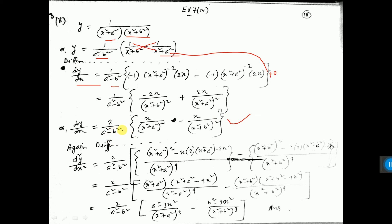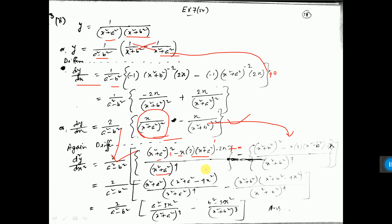Again differentiating, the constant stays outside. Now this term requires u by v differentiation. Here: v² times [v · d/dx(u) — that is x differentiation = 1] minus [u · d/dx(v) — v means this expression, 2 into the expression to the power 1, times d/dx of x² = 2x, and d/dx of a² = 0, not written]. Now the simplification is left and you can do that.